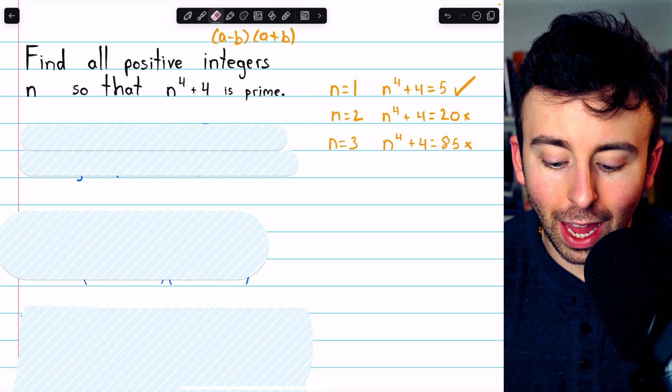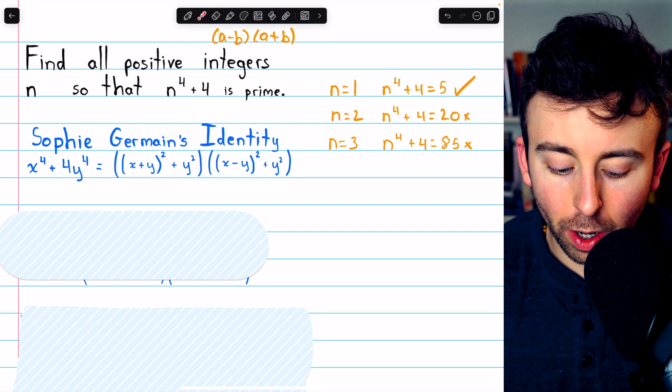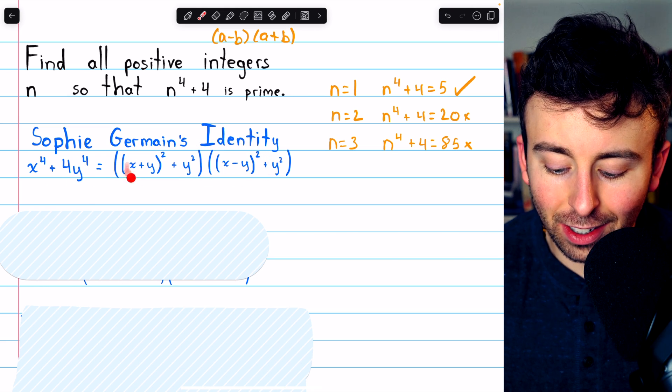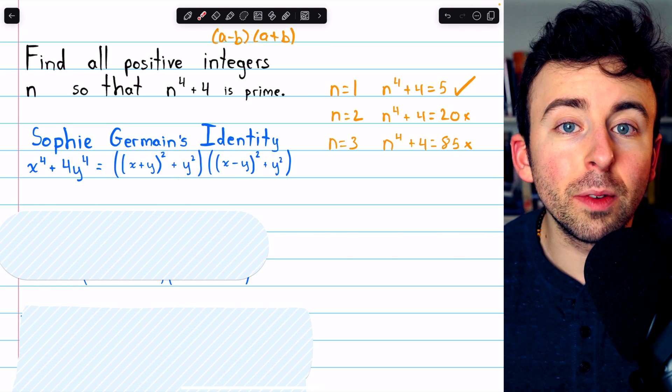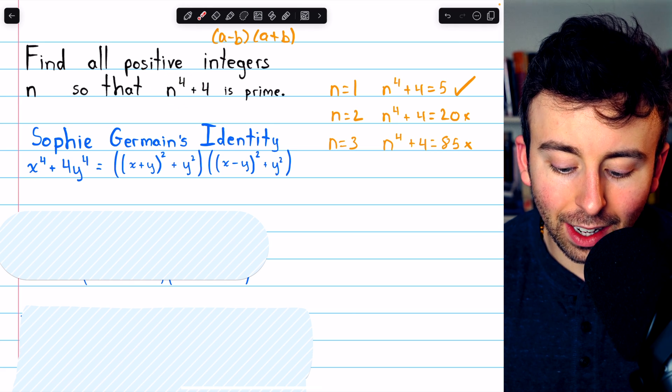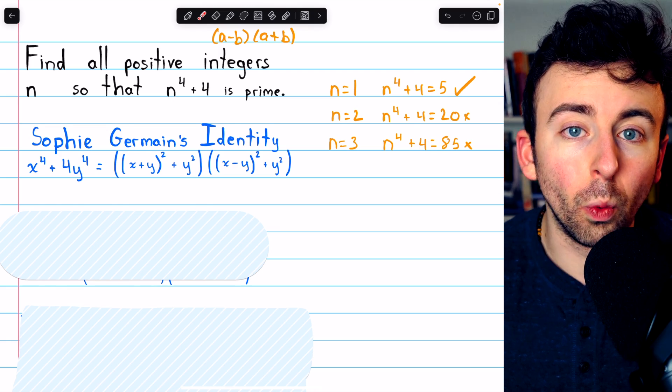One special case is shown by Sophie Germain's identity. x to the 4 plus 4y to the 4 is equal to this expression here, and we're going to be able to use this in this situation by setting x equal to n and setting y equal to 1.